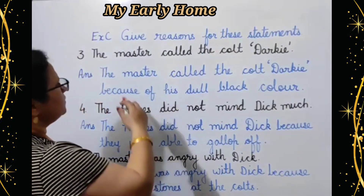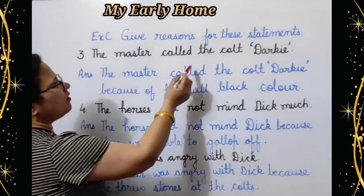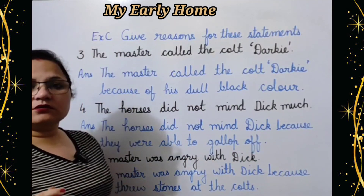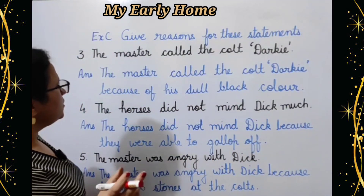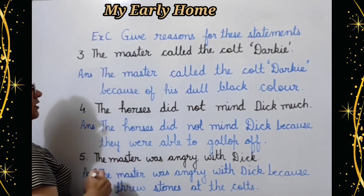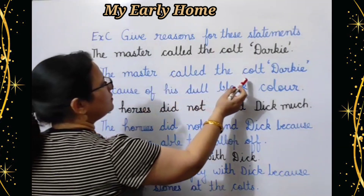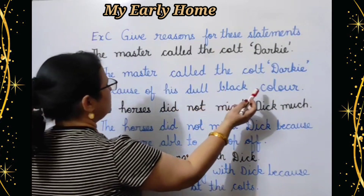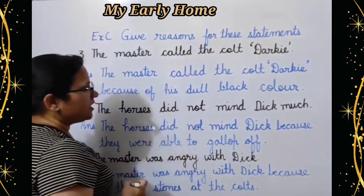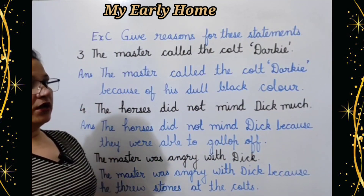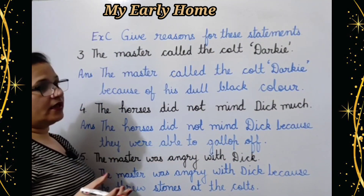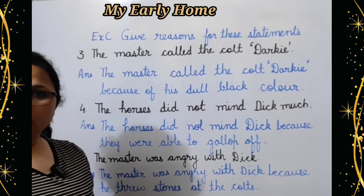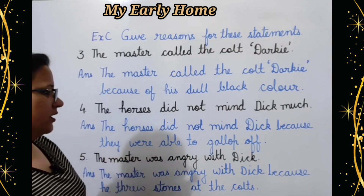Number three: The master called the colt Darky. Master colt ko Darky bulaata tha. Kyuun? Answer: The master called the colt Darky because of his dull black color — kyunki uska gahera kala rung tha jiski wajahe se wo usse Darky kehta tha.